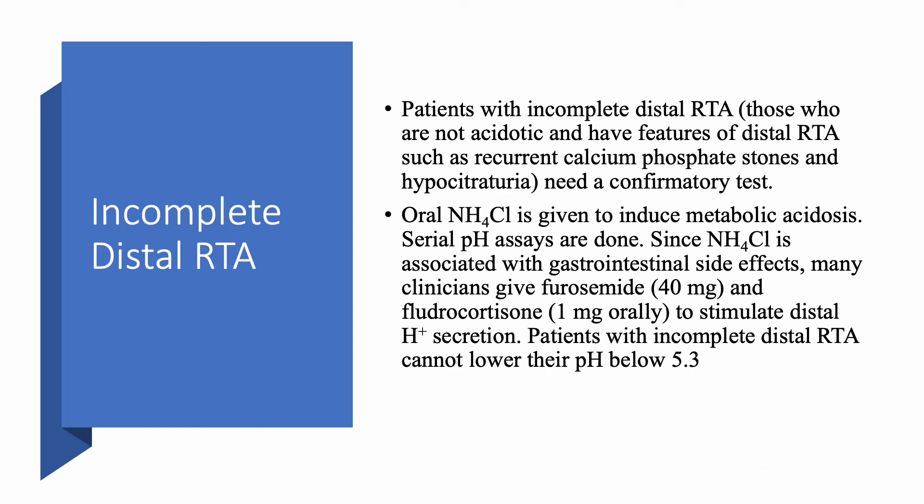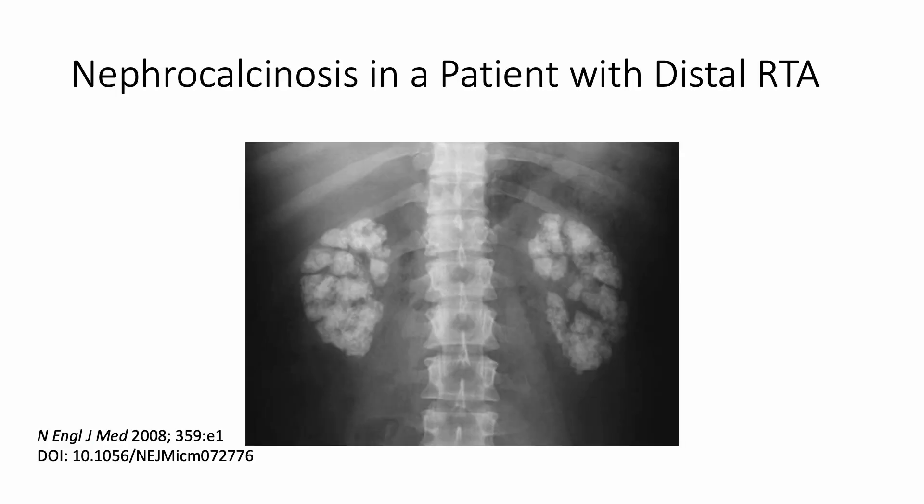Regardless, patients with incomplete distal RTA still need potassium citrate to replace potassium and citrate, because the main problem is calcium phosphate stone formation. This image shows a patient with nephrocalcinosis — you can see how severe the calcification is. There is no contrast involved; this is how the kidneys appear.